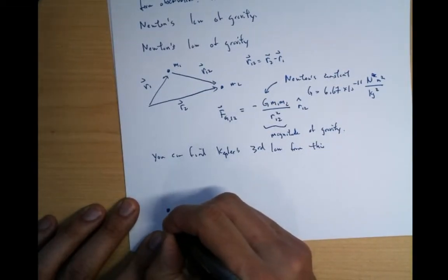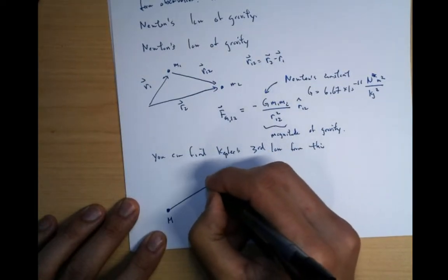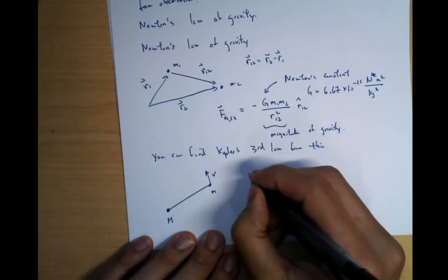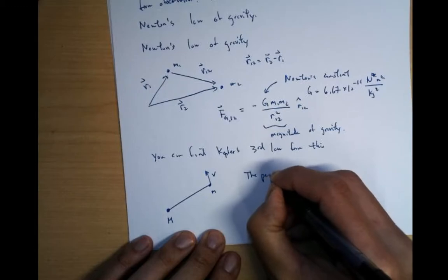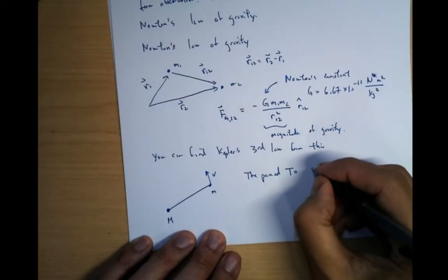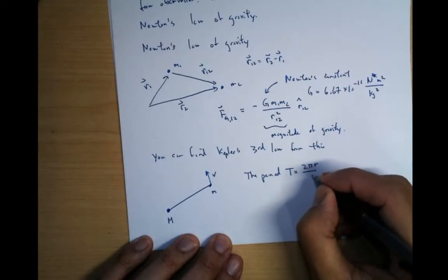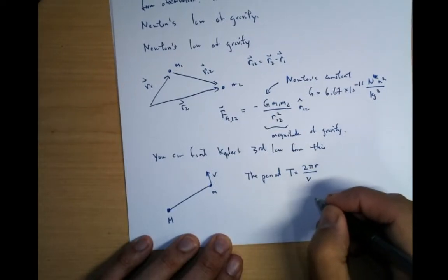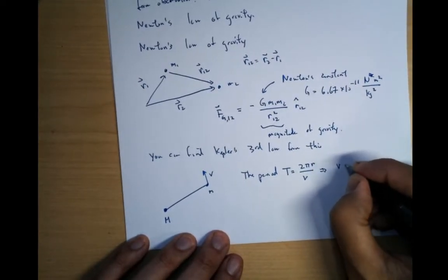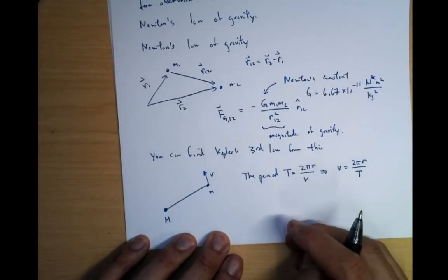Suppose you have a really massive body M far away with a little m moving some velocity v here. The period T is equal to the time it takes to go around in a circle, right. So the distance of a circle divided by the velocity. So what that means is that v is equal to 2 pi r over T.